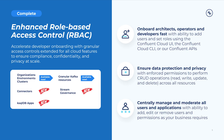Just to reiterate the key value propositions. With RBAC, you can onboard architects, operators, and developers fast with the ability to add users and set roles using the Confluent Cloud UI, the Confluent Cloud CLI, or our Confluent APIs. You can ensure data protection and privacy with enforced permissions to perform CRUD operations across all resources. And finally, you can centrally manage and moderate all users and applications with the ability to add, edit, or remove users and permissions as your business requires.